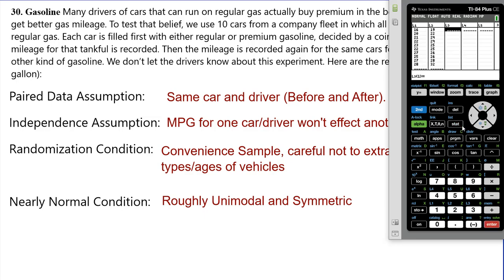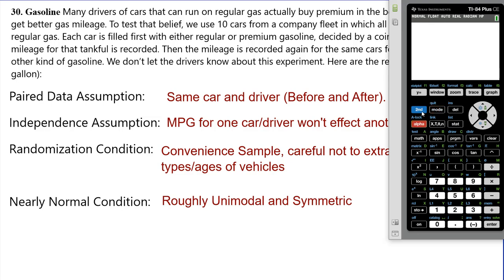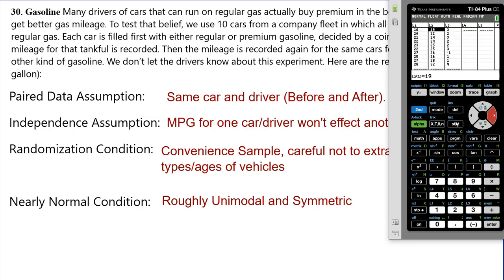Let me go to stat → edit. I'm going to put it in list three and list four — actually, regular gasoline went in list one, premium gasoline went in list two. Now remember, we're pairing this up — it's the same driver and car pair for each one. So I can subtract the differences. Which order? Which one do you think will have higher miles per gallon? List two — the premium one. So I'll do list two minus list one and store it as list three. These are the paired differences. Notice most of these are positive, showing right off the bat some evidence that they're getting better fuel economy with premium gasoline.